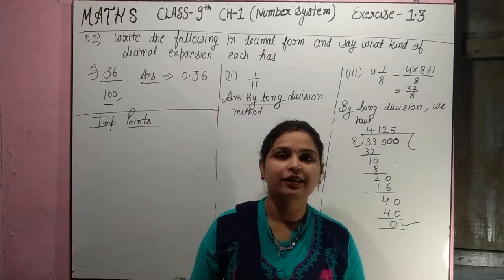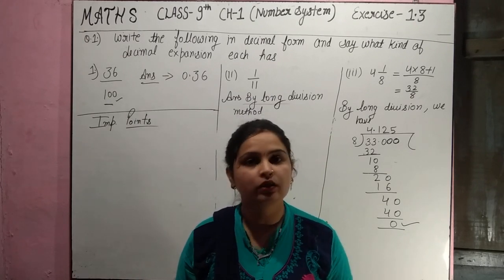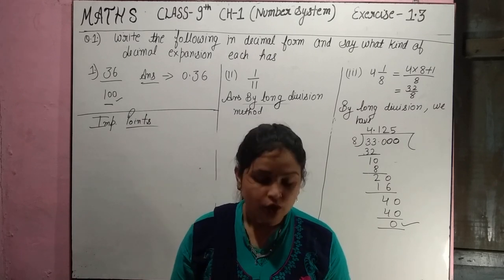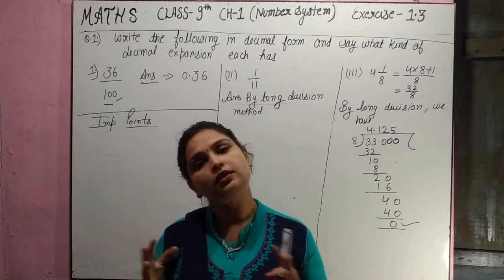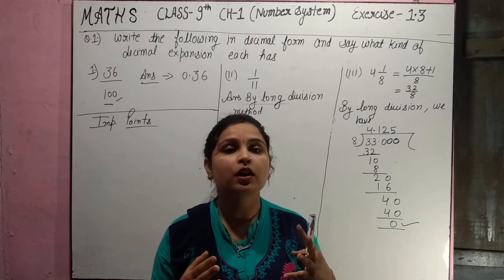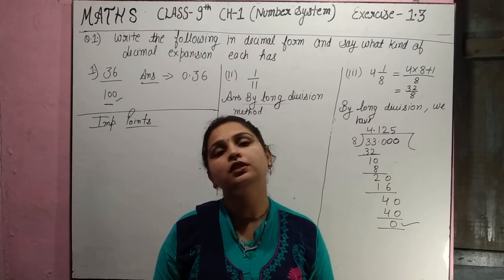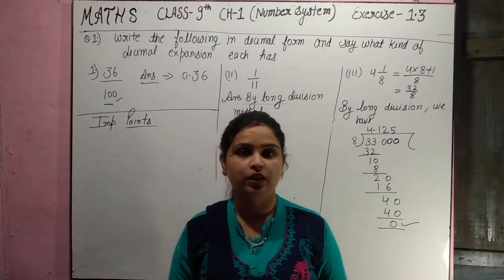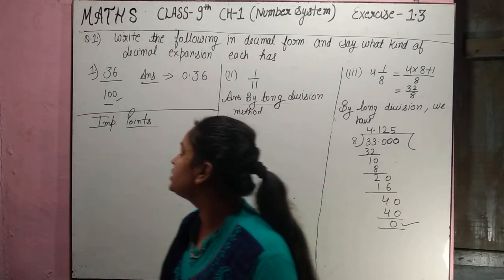Hello guys, this is Preeti here. Today we are going to do Class 9th Maths Exercise 1.3. In this exercise we will discuss decimal-related questions. Decimals are of two types. First is the terminating and second is the non-terminating. Terminating decimals have a finite number of digits, and non-terminating decimals have an infinite number of digits. Let's start with our first question.